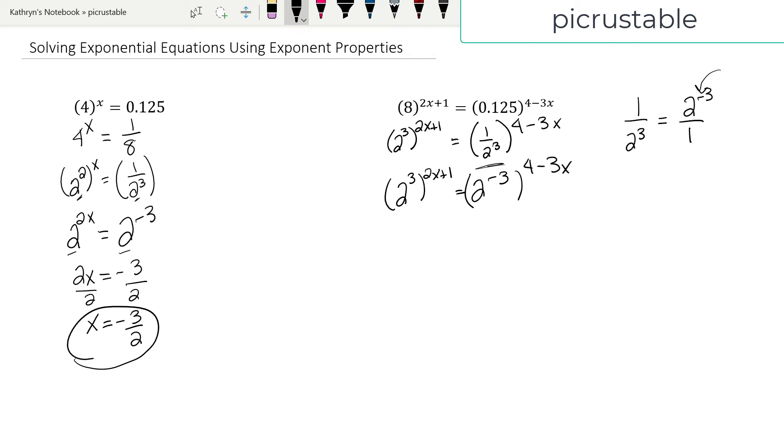Now, we're going to do 2 to the third times 2x plus 1 equals 2 to the negative 3 times 4 minus 3x. We have the same base, which is pretty cool.